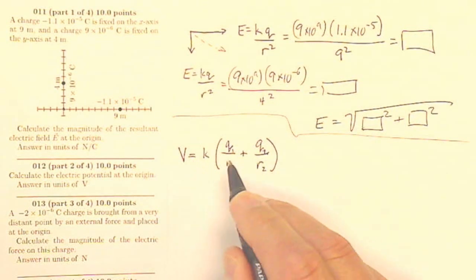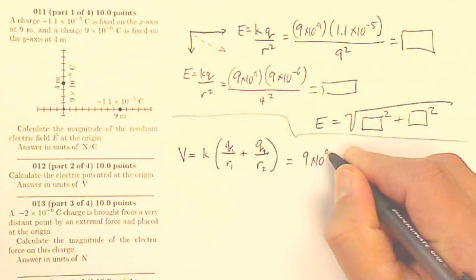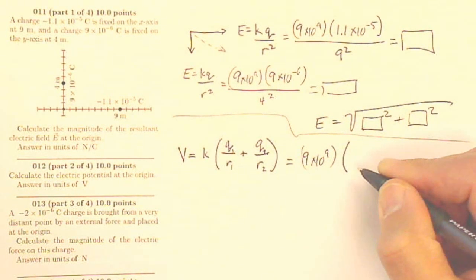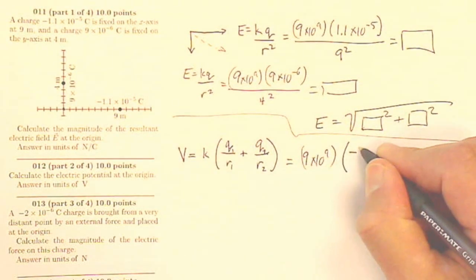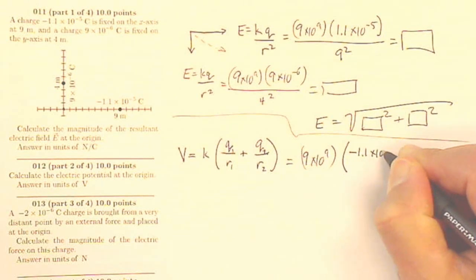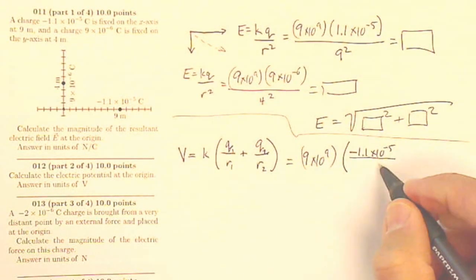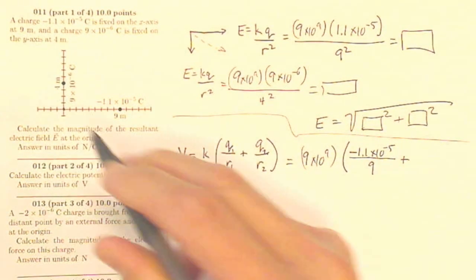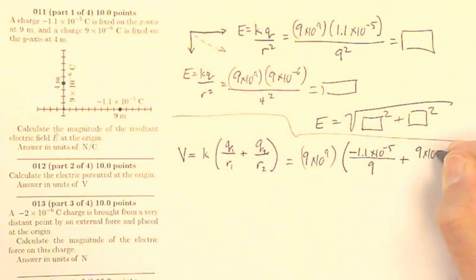This is also K times the sum of the Qs over the Rs. So here it's going to be 9 times 10 to the 9th, times parentheses Q1 over R1. So Q1 is negative 1.1 times 10 to the minus 5th. Here the negative matters, because it's a scalar, so I've got to know if I'm adding or subtracting it, over 9 meters, plus my positive 9 times 10 to the minus 6th, divided by my 4 meters.